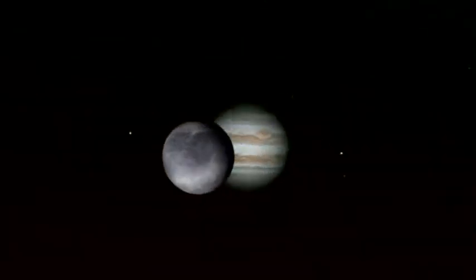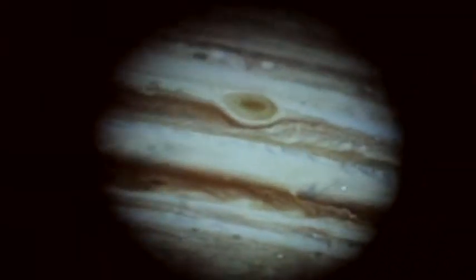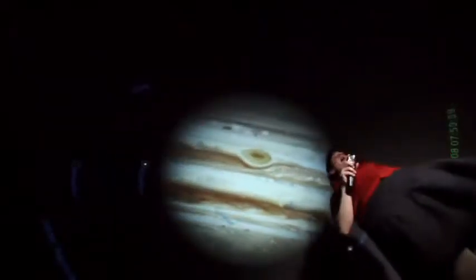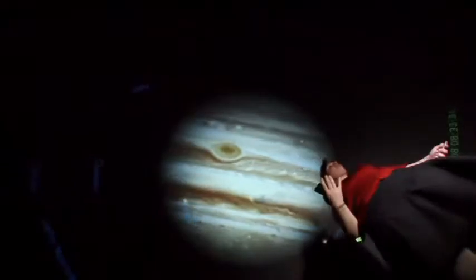The red spot is a big storm, so it's kind of like there's always a tornado on Jupiter. In that one red spot you can fit about three Earths.